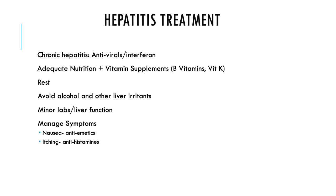For treatment of hepatitis, when it goes chronic, we use antivirals, interferon, and some immune modifiers to help support the patient. But overall with hepatitis, it's a lot of supportive care. In the acute phase, we want to make sure they get adequate nutrition, vitamin supplements like B vitamins and vitamin K — because those are largely made in the liver — lots of rest, and avoiding things that irritate the liver like alcohol and Tylenol. We monitor labs and liver function to make sure it's not progressing to chronic, and manage symptoms — anti-emetics for nausea, antihistamines if they're itching from excess bilirubin.